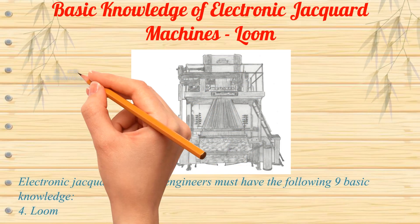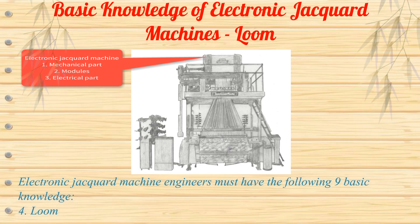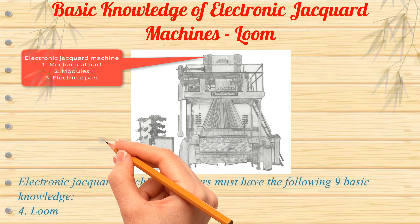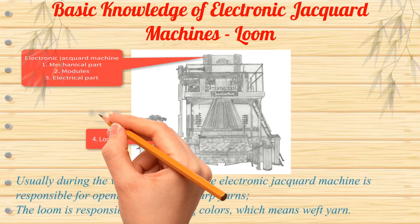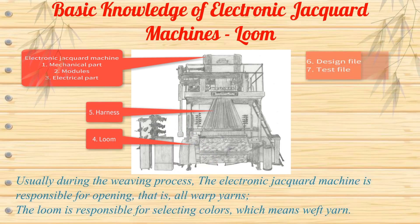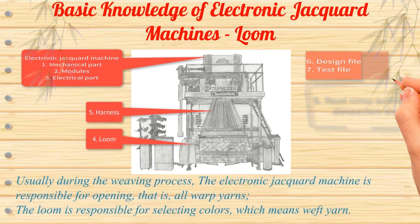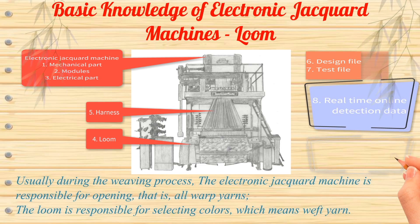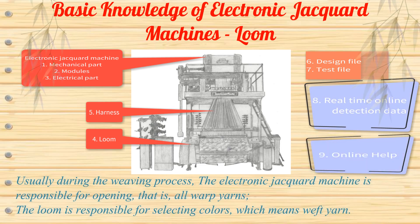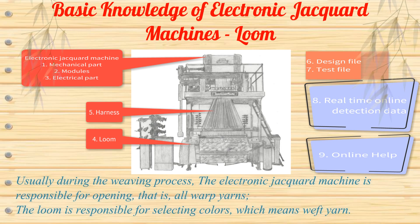Electronic jacquard machine engineers must have the following 9 basic knowledge. Usually during the weaving process, the electronic jacquard machine is responsible for opening — that is, controlling all warp yarns. The loom is responsible for selecting colors, which means controlling the weft yarn.